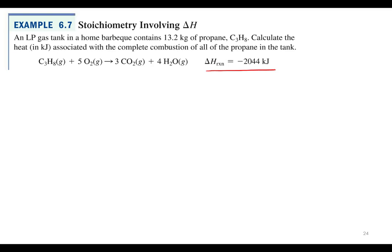In example 6.7, an LP gas tank in a home barbecue contains 13.2 kilograms of propane, C₃H₈. We can calculate the heat associated with the complete combustion of all the propane in the tank.